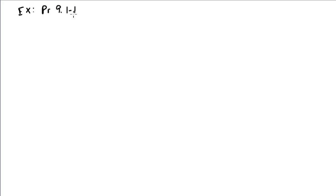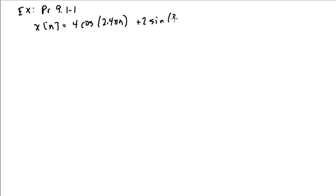Let's look at a couple of example problems of computing the discrete time Fourier series. The first problem we'll look at is 9.1-1, where we're asked to find the Fourier series representation of this discrete time sequence. The first step is to write these sinusoids in terms of frequencies within the range of minus pi to pi.